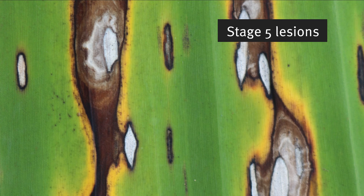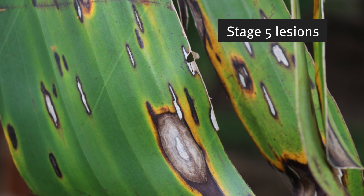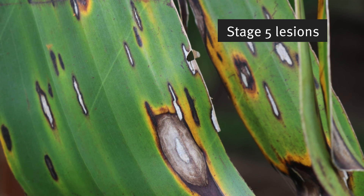Stage 5 is when the spots further develop into mature spots that still have a sunken center and turn grey, with a dark brown to black border, sometimes with a yellow halo.